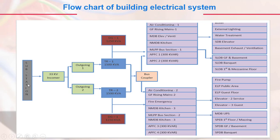You can see here the substation 33 kV incomer with two outgoing and two transformers, both are 1500 kVA. The DG is selected at 1250 kVA. There is a bus coupler as well — in case one transformer fails on one side, we can switch over to the bus coupler. The remaining distribution is shown in the diagram, which is self-explanatory.